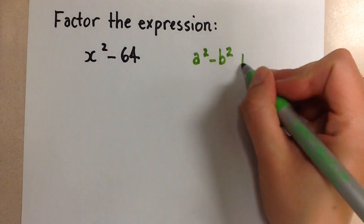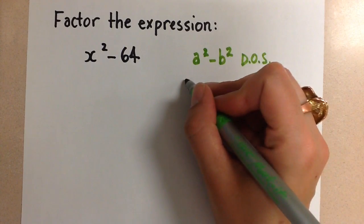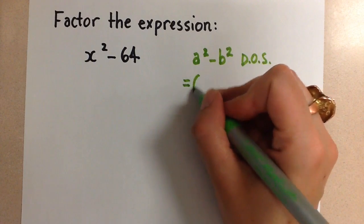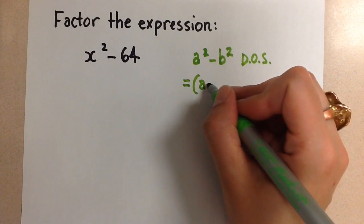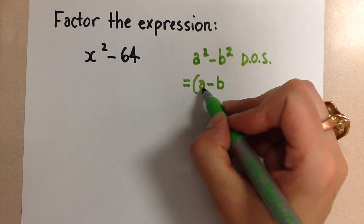we call this a difference of squares, and to factor it, we simply always follow this formula where we take the square root of a squared, which is a,